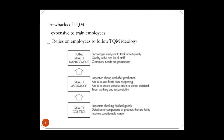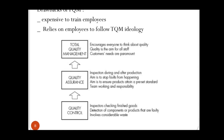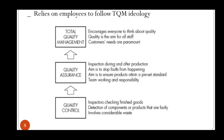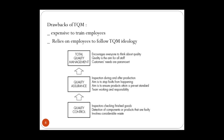TQM also relies on employees following instructions, which is hard especially when you have many employees implementing this system. To summarize: quality control uses inspectors at the end of the process; quality assurance involves inspection during and after production with team working and shared responsibilities; and total quality management makes quality part of the ethics of all employees — everyone in the organization, at every level, is encouraged to think about quality.